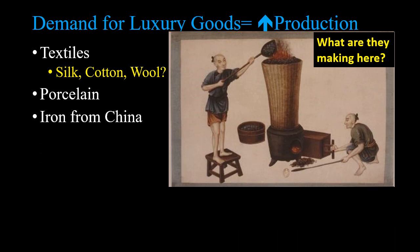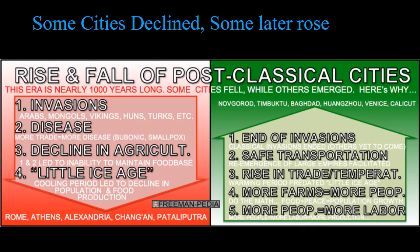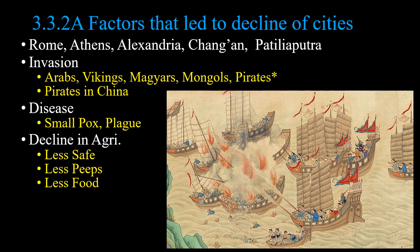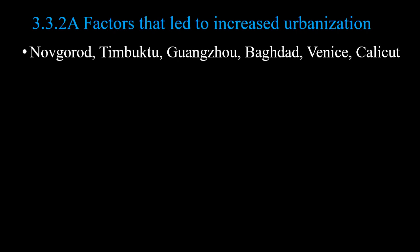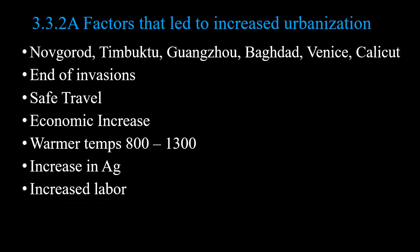Iron production is also shown. Some cities decline and some rose. Reasons for decline include invasions, disease, decline of agriculture, and the Little Ice Age. Reasons for growth include end of invasion, better transportation, rise in trade, rise in temperatures, more farms, more people, and more labor. Increased urbanization helps cities grow — safer travel, economic increase, a great warming period, increase in agriculture, and increase in labor.